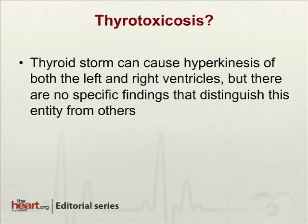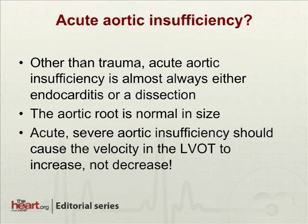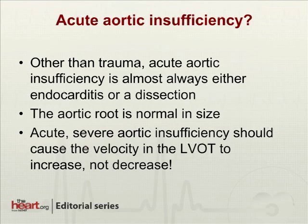Could this be thyroid toxicosis? A thyroid storm can cause hyperkinesis of both sides of the heart, but there are no specific findings to distinguish that from any other entity that causes a hypercatecholamine state. Could this be acute aortic insufficiency? Other than trauma, the only things that really cause acute aortic insufficiency are infection or dissection. There are no lesions on the aortic valve and the aortic root is normal in size — dissections don't occur spontaneously in normal-sized aortas. More importantly, aortic insufficiency should cause an increase in the velocity of the LVOT, but the pulse wave Doppler of the LVOT demonstrates a low velocity. Therefore, aortic insufficiency is highly unlikely.